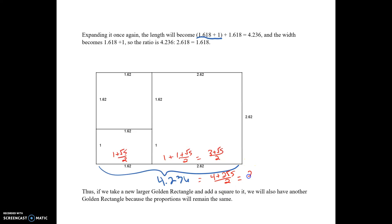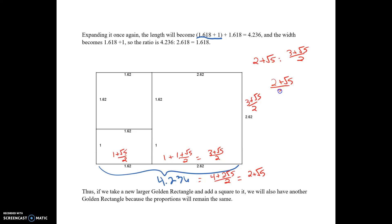When we divide everything by 2, our new length is 2 + √5. And the width is the same as before: (3 + √5) / 2. So our new ratio in exact numbers is (2 + √5) to (3 + √5) / 2. When we divide these two, we get (2 + √5) × 2 / (3 + √5).